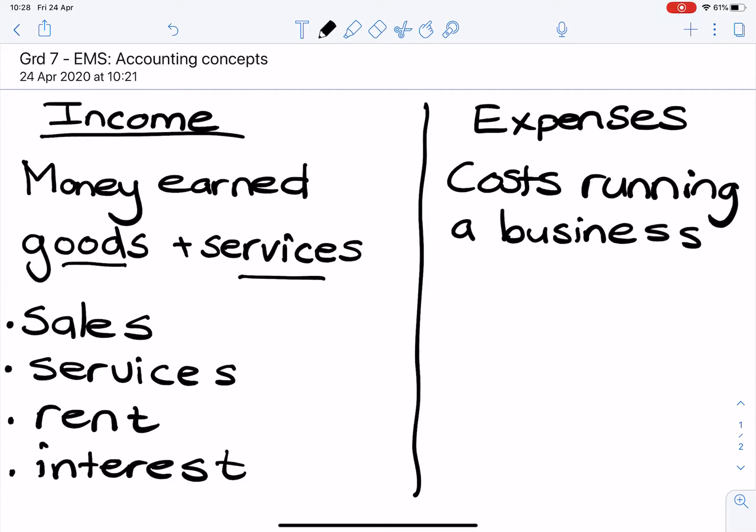Businesses have different expenses depending on what type of business it is. If it was a hairdresser, for example, they would spend money on water and electricity, their products, their advertising, their stationery, and salaries or wages.